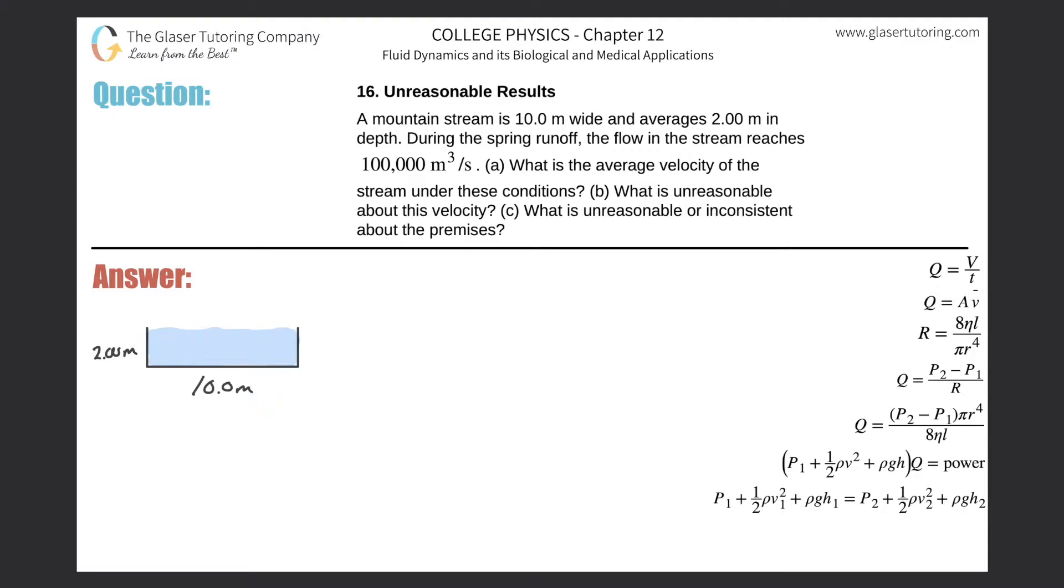Number 16, unreasonable results. A mountain stream is 10 meters wide and averages 2 meters in depth. During the spring runoff, the flow in the stream reaches 100,000 cubic meters per second. What is the average velocity of the stream under these conditions? For letter A: